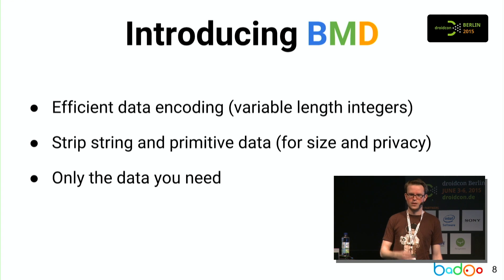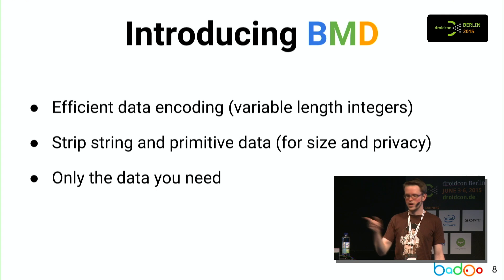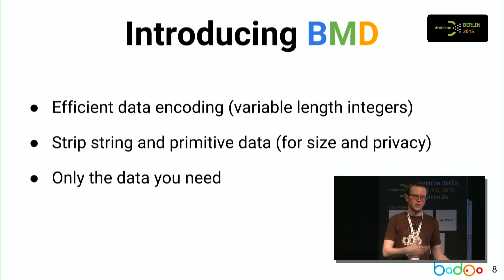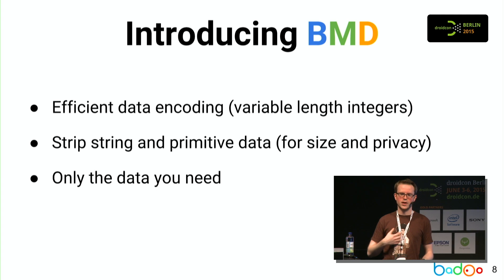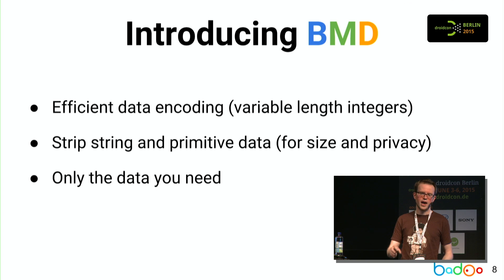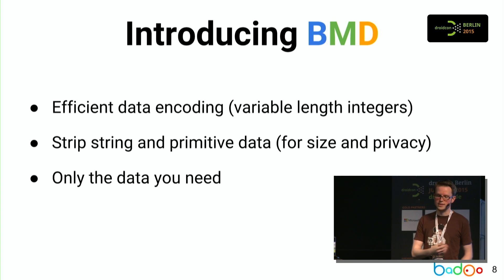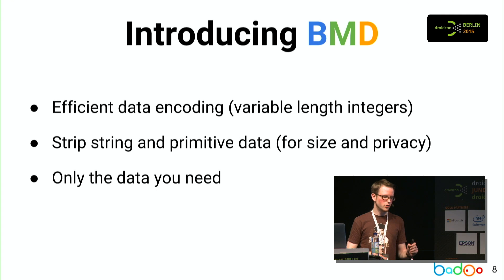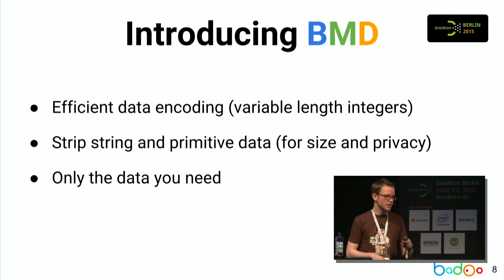So the key here for creating an efficient memory dump is keeping only the information that you need. And I know you want to see some numbers — everyone loves numbers. So comparing BMD and hprof, there's one number I'm highlighting in red because that's the one that really sells this whole thing: 1.8%. Doesn't sound like much, but this is how big the BMD file is compared to the original hprof file.